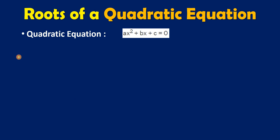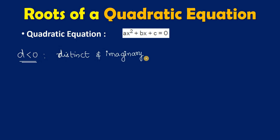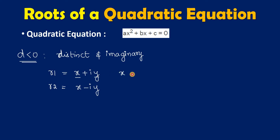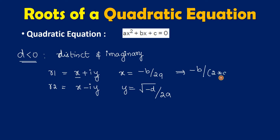Coming to the third case, if d is less than 0, the roots are distinct and imaginary. The roots will be in the form x + iy and x - iy. The formulas are: x = -b / 2a, and y = √(-d) / 2a. In Java, x is written as -b / (2 * a) and y is written as Math.sqrt(-d) / (2 * a).